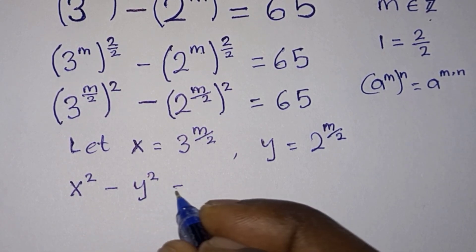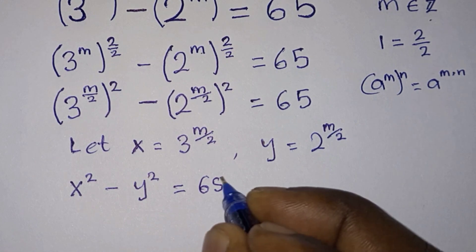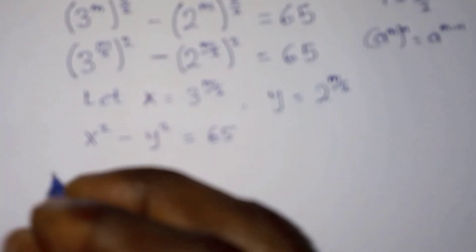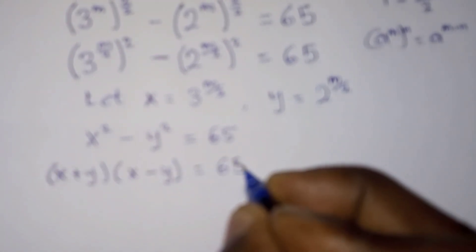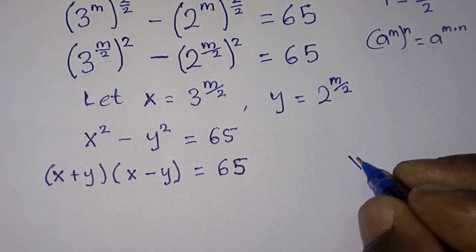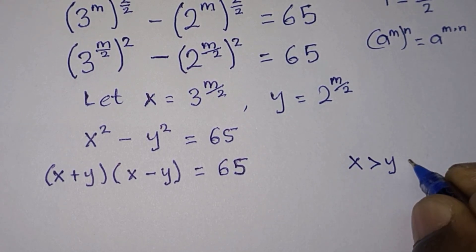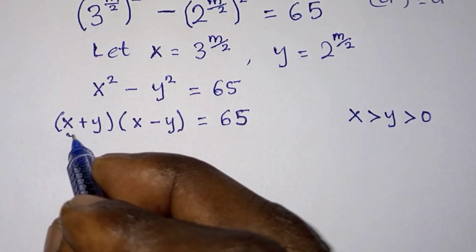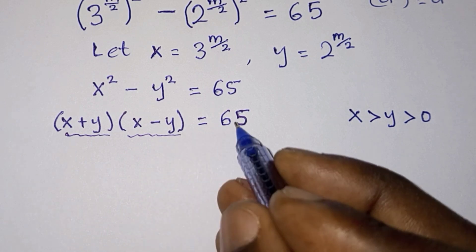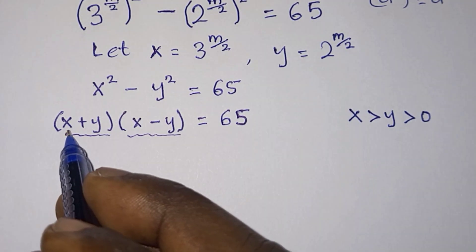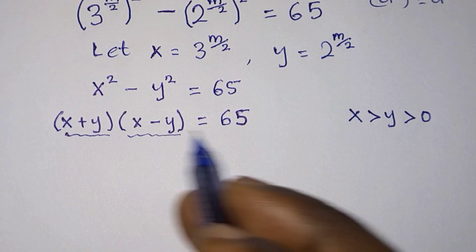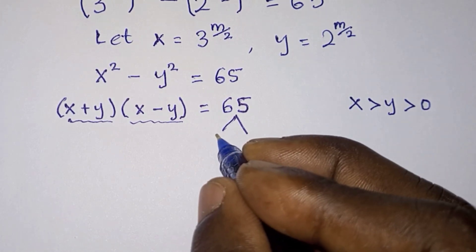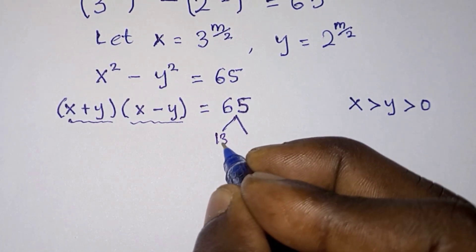On the left-hand side of the equation we have a difference of two squares, which can be written as (x + y)(x - y) = 65. Note that x is greater than y and y is greater than 0. Since x + y is greater than x - y, we write 65 as two factors: 13 times 5.